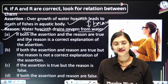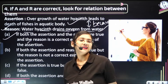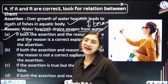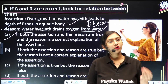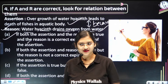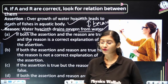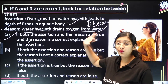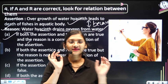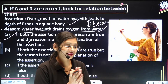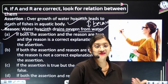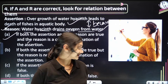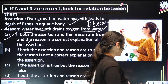The confusion mainly arises when both statements are correct. If one statement is wrong, it is simply easy to answer between options C and D. The main problem in assertion-reasoning questions is when both statements are correct and you have to determine whether there is a connection between them or not — that is the confusing part.